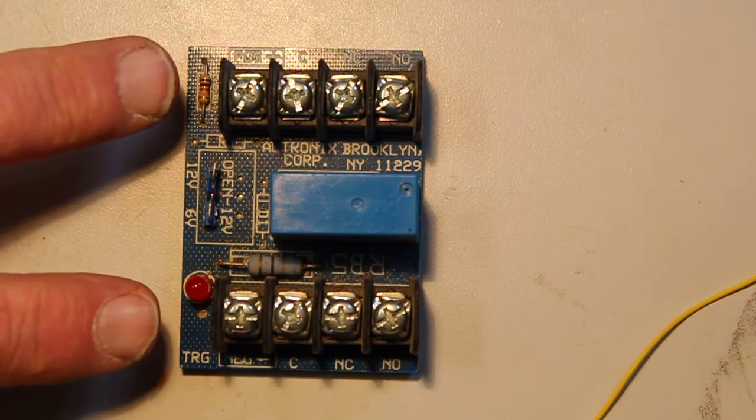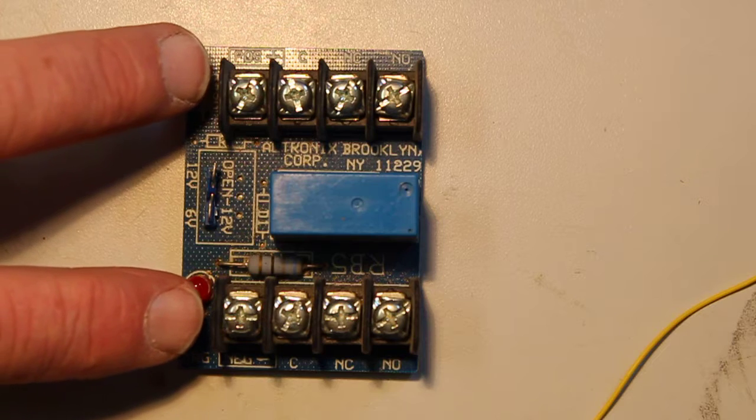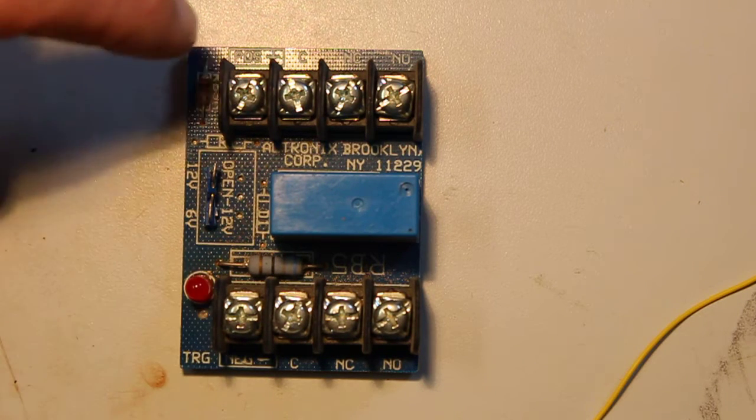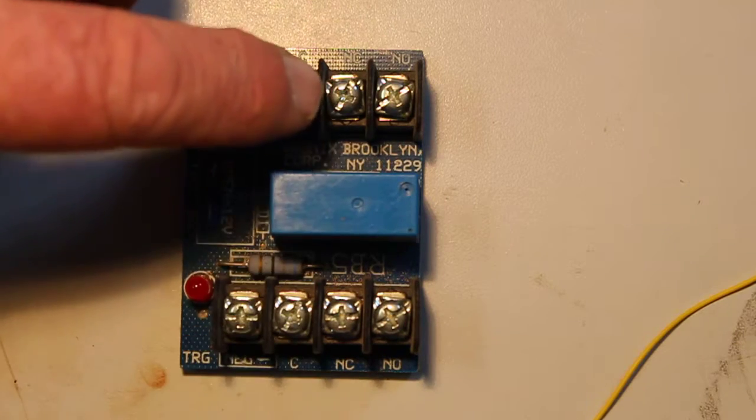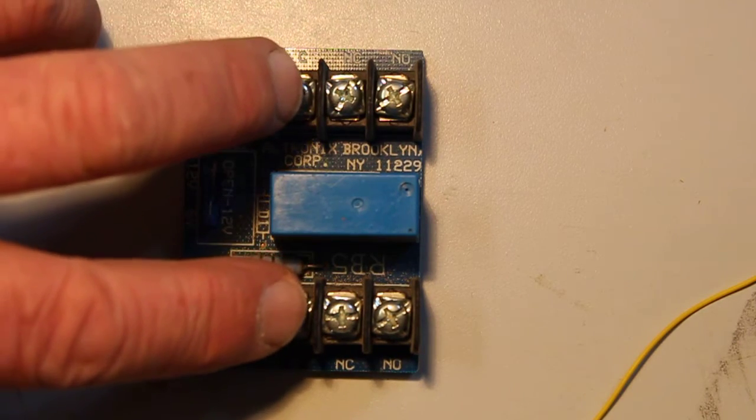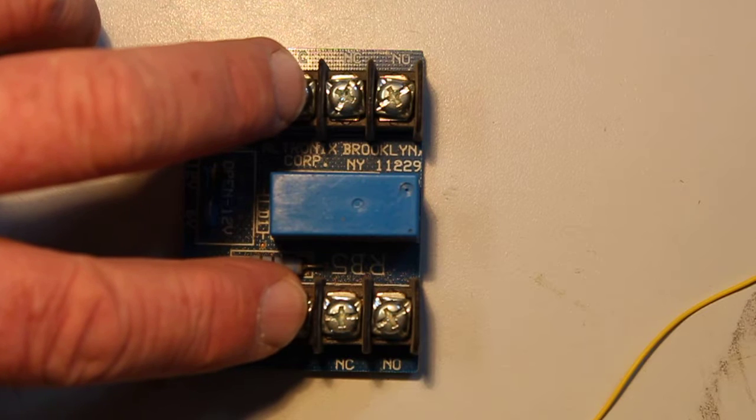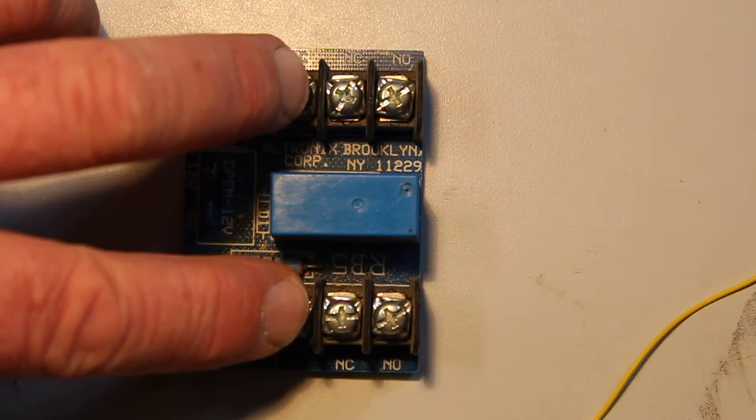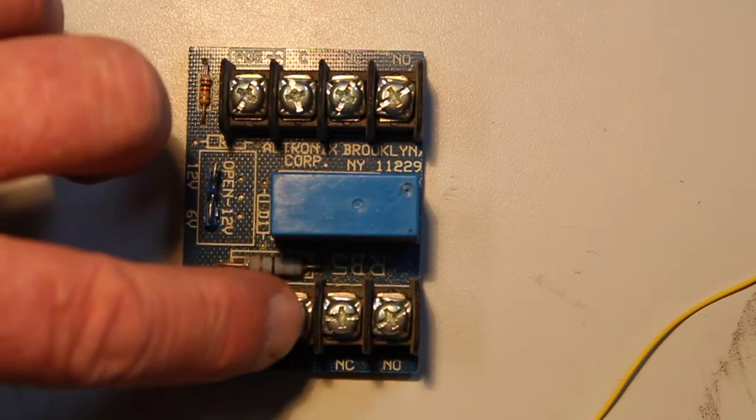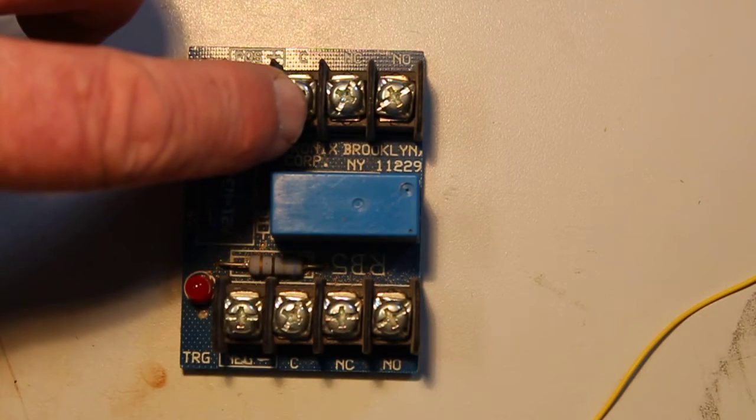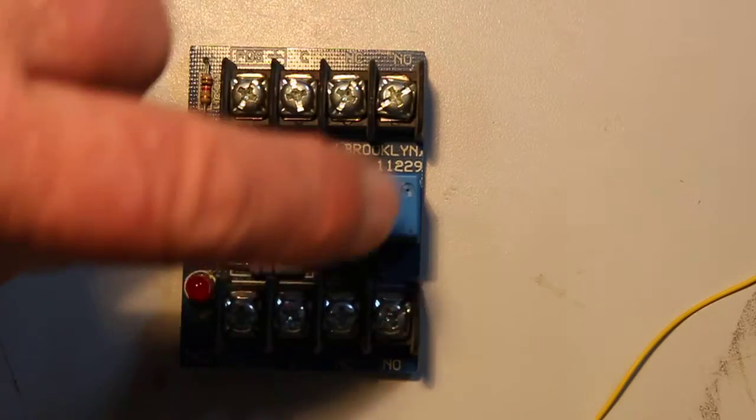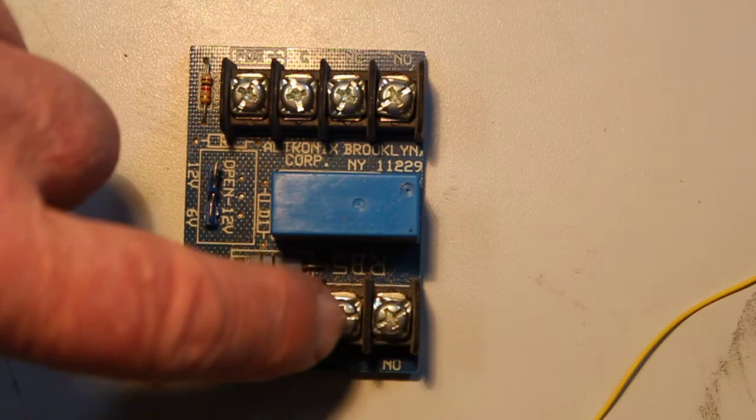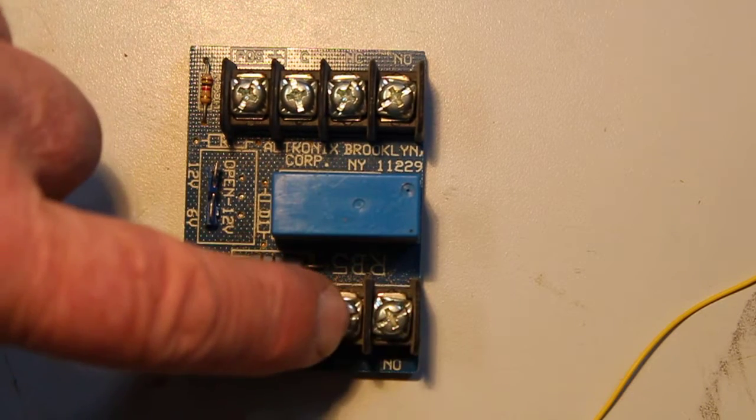When the alarm panel goes into alarm, this is where you want to put your bell circuit. On both the commons, that is going to be continuous power to power the cameras, the smoke detectors, or so on and so forth. The polarity does not matter on these. Your smoke detectors or cameras would be powered off just this side, the normally open and normally closed.